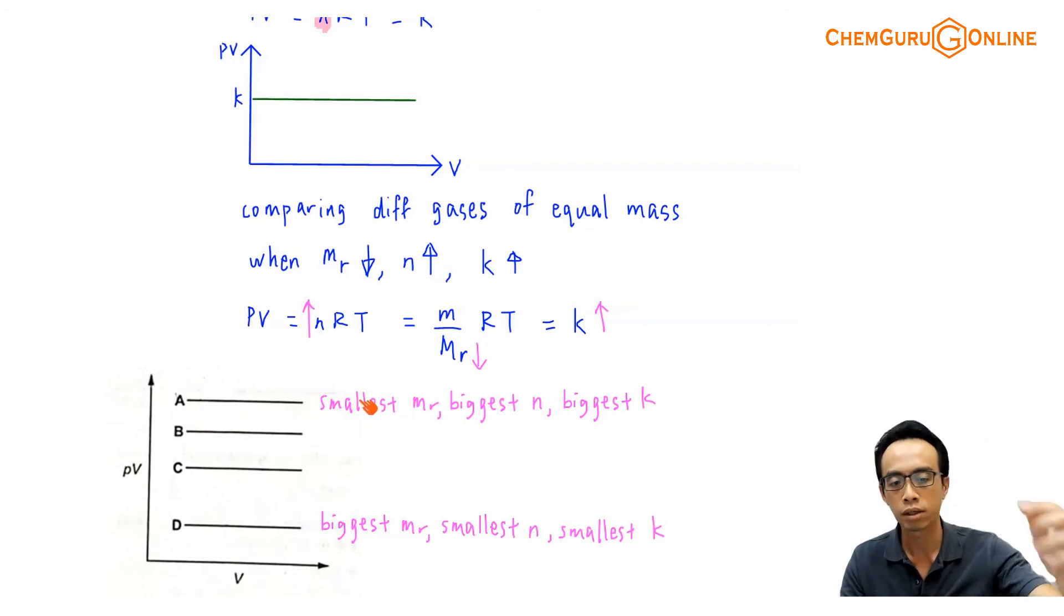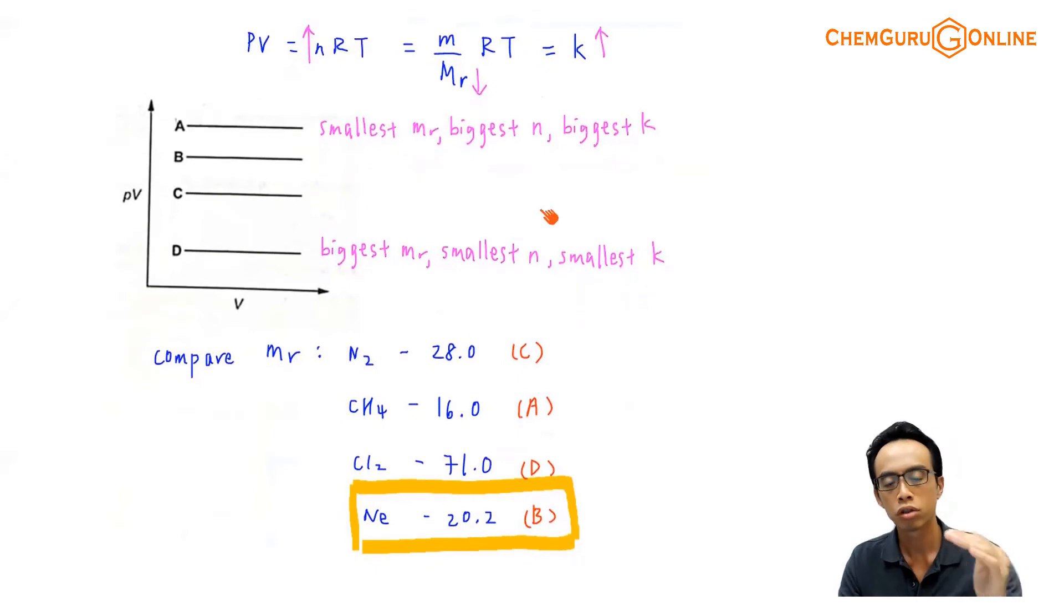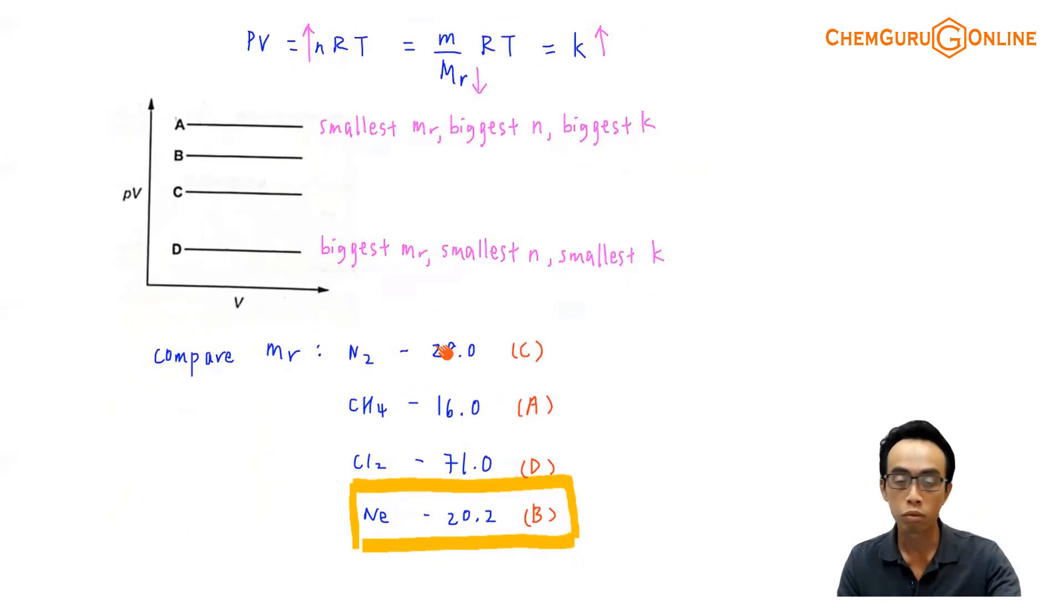Now conversely, if I consider D, D must have the biggest molar mass, because if it has the biggest molar mass, then it will mean that the number of moles is the smallest. Smallest number of moles means that my NRT will be the smallest, and my K will also be the smallest. So D will correspond to the gas with the biggest molar mass. And once we have this comparison in place, then I can compare the molar mass for each of my gases. We can refer to the periodic table and work out the molar mass here. I'm just showing you the outcome. The calculation is straightforward enough.